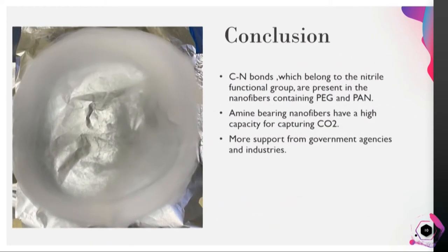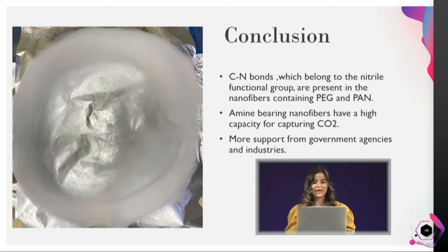To summarize, carbon-nitrogen bonds belong to the nitrile functional group, and they're present in my nanofibers containing PEG and PAN from the FTIR test. Amine-bearing nanofibers have a high capacity for capturing carbon dioxide. The reason for this is that after the carbon dioxide and the amines have been mixed, they can be separated with a reversible reaction.